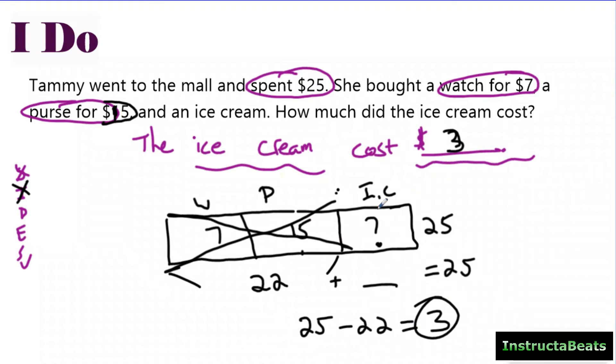Now, if you notice right here, my tape diagram wasn't perfect because I didn't know this missing piece. And so I didn't know it was going to be three. And my three is about the same size as my seven.